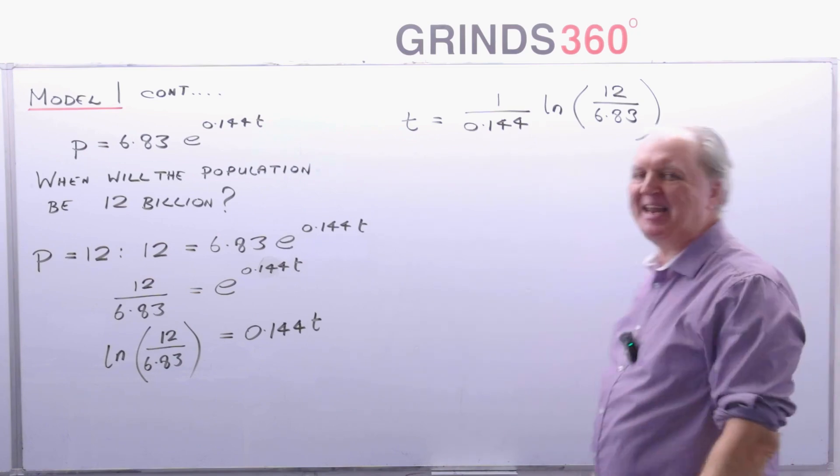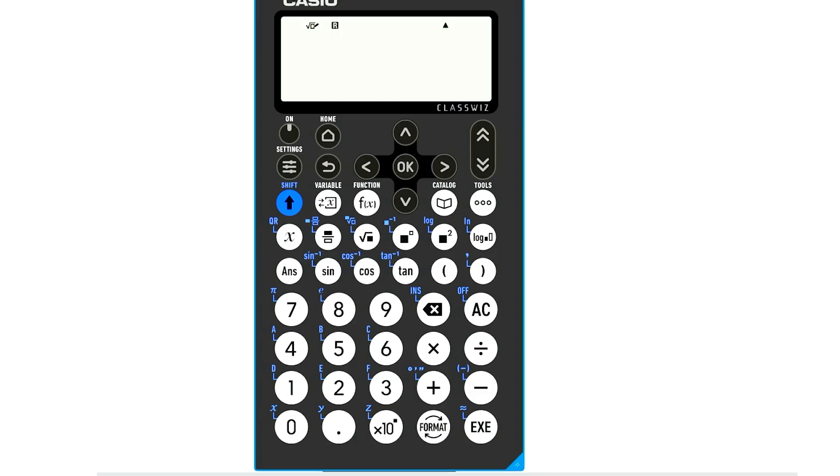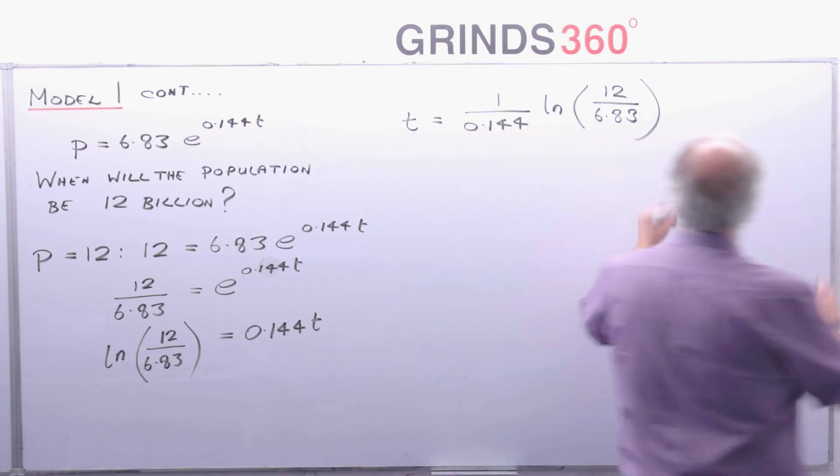So let me see what that is on my calculator. Execute. Get about 3.9. Well, 3.9, let's make that approximately 4. The answer there is approximately 4.